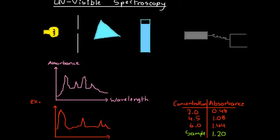UV visible spectroscopy is very similar to atomic absorption spectroscopy. However, whereas atomic absorption dealt with straightforward atoms and elements by themselves, UV visible spectroscopy can deal with substances besides elements — so it can deal with molecular compounds and other sorts of substances like that, not just elements.